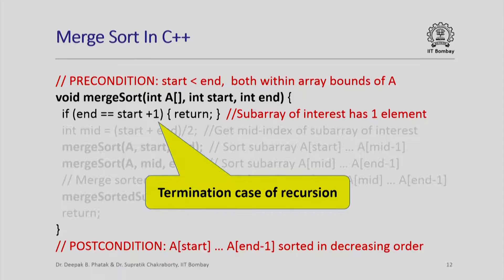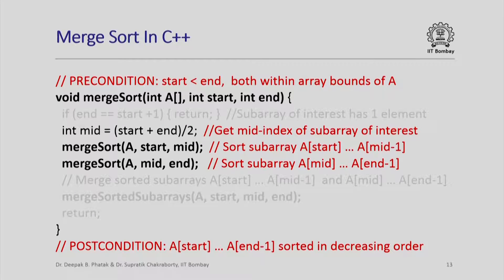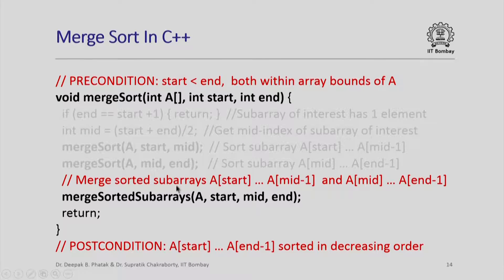Otherwise, if the subarray has more than one element, I find the mid index as (start + end) / 2, then recursively call merge sort twice — once for the subarray from start to mid-1 and once for the subarray from mid to n-1. Once these calls return, both subarrays are sorted. I then call merge sorted subarrays, passing array a and the two sorted subarrays: a[start] through a[mid-1] and a[mid] through a[n-1]. Finally, since merge sort returns void, I simply return.